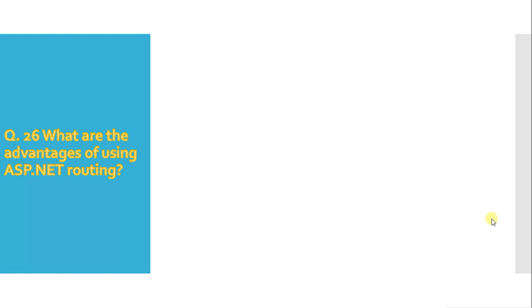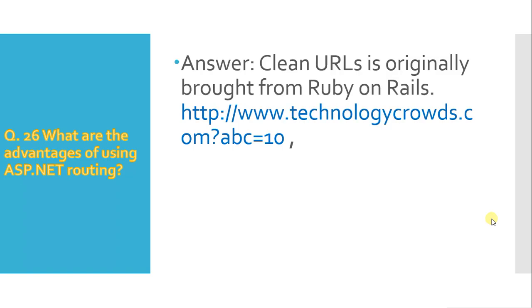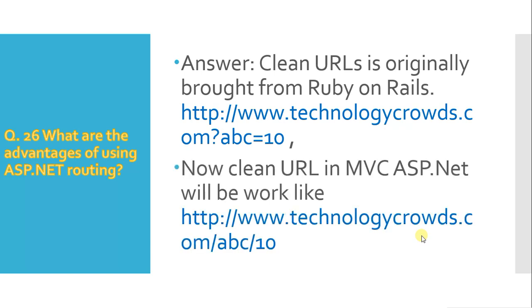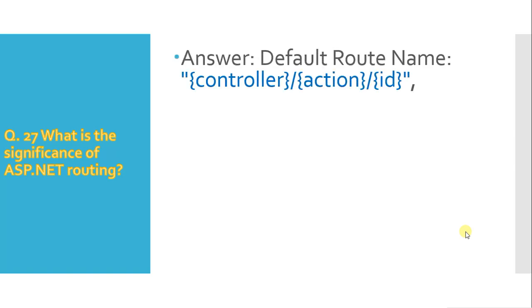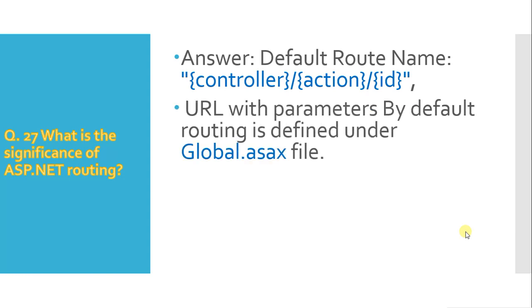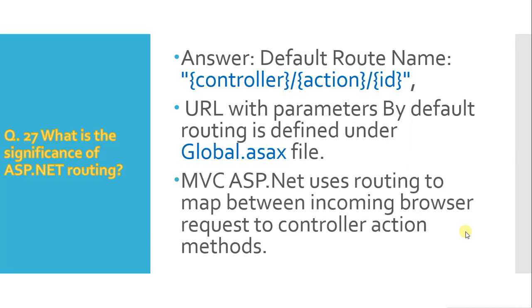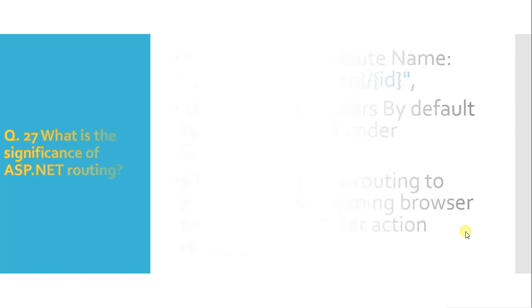Question 22: what are the advantages of ASP.NET routing? Clean URLs were originally introduced in Ruby on Rails. For example, instead of technologycrawl.com?abc=10, you get a clean URL like technologycrawl.com/abc/10. The controller and method are introduced in MVC. Routing maps incoming browser requests to controller actions and is defined under the Global.asax file.